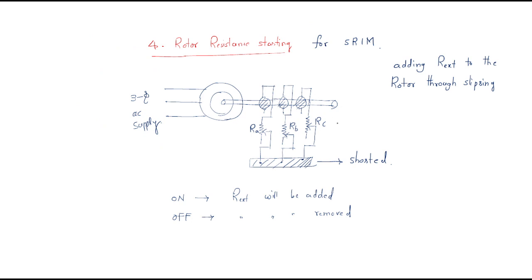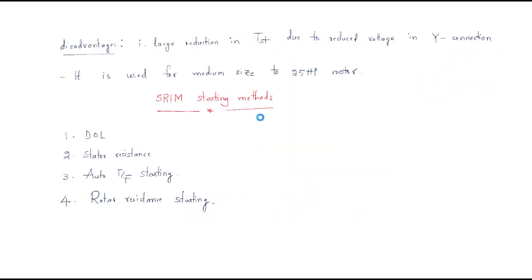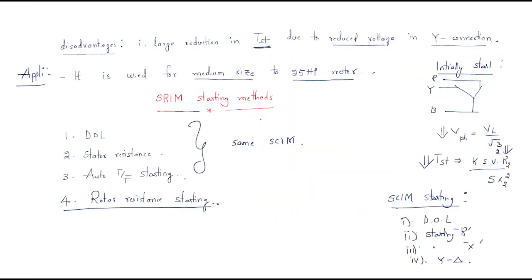Squirrel cage induction motor has four starting methods and slip ring also has four methods, but the fourth method is different. For squirrel cage we have the star-delta starter, and for slip ring we have the rotor resistance starting method. I hope all of you understand the session. Thank you.